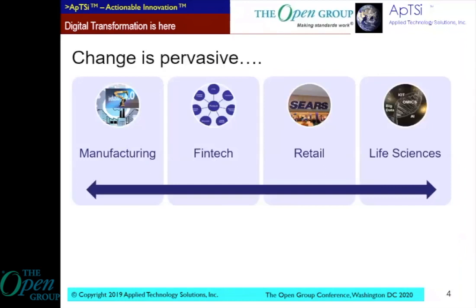Change is pervasive. Almost everything that's happening in the digitized world today is impacting how we all do business. Change is driving how we deal with manufacturing — for example, Industry 4.0 and evolving supply chains. In the retail sector, Sears, which has been around for almost 200 years, shifted from being a catalog company to a bricks-and-mortar organization and today is struggling to adapt to e-tailing. This continuous change is driving key characteristics and is changing the way business is done.